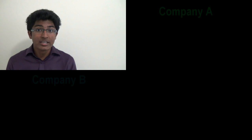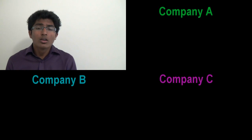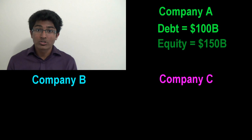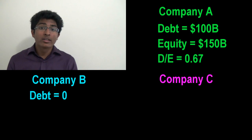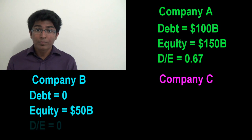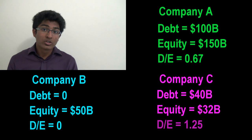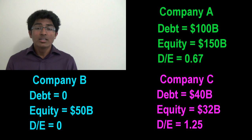Companies A, B, and C are all part of the same industry — we'll use retail for this example. Company A has a total debt of $100 billion and equity of $150 billion, giving them a debt-to-equity ratio of 0.67. Company B has no debt and an equity of $50 billion. Company C has $40 billion in debt and $32 billion in equity, giving them a debt-to-equity ratio of 1.25.